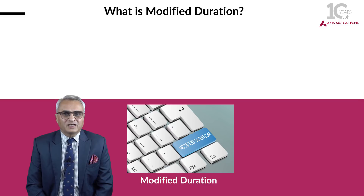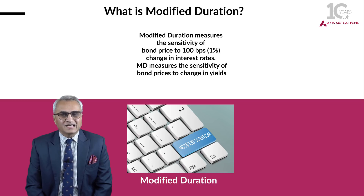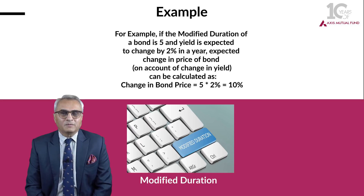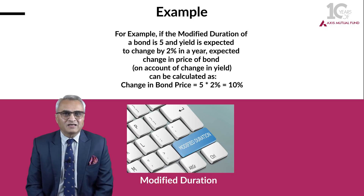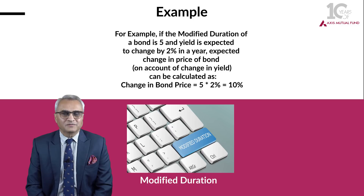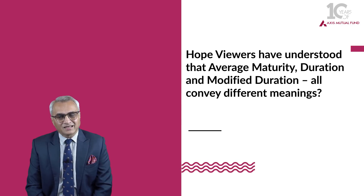What is modified duration? Modified duration measures the sensitivity of the price of bonds to a 1% change in interest rates. For example, if a modified duration is 5 and we expect a change in interest rates of 2% either upward or downward, the change in the price of the bond will be 5 × 2 = 10%. If interest rates are likely to go up, there will be a negative implication. If interest rates are likely to go down, there will be a positive implication of 10% on the price of the bond. I hope investors have understood the difference between average maturity, duration, and modified duration.